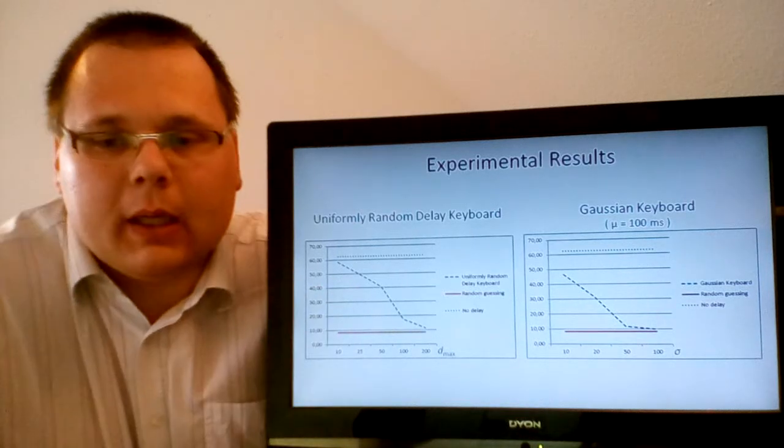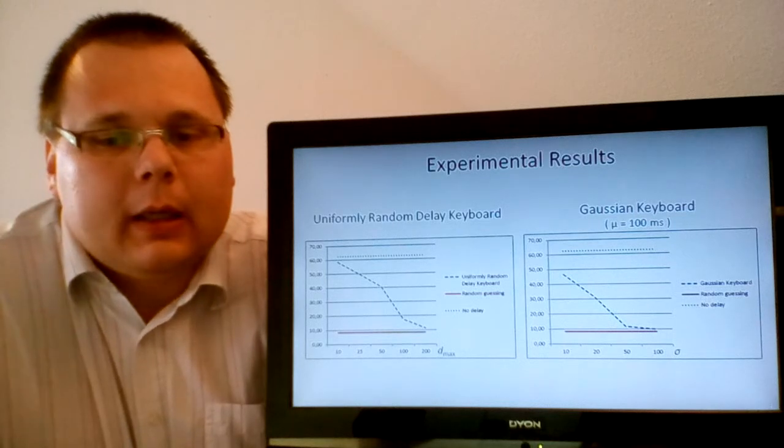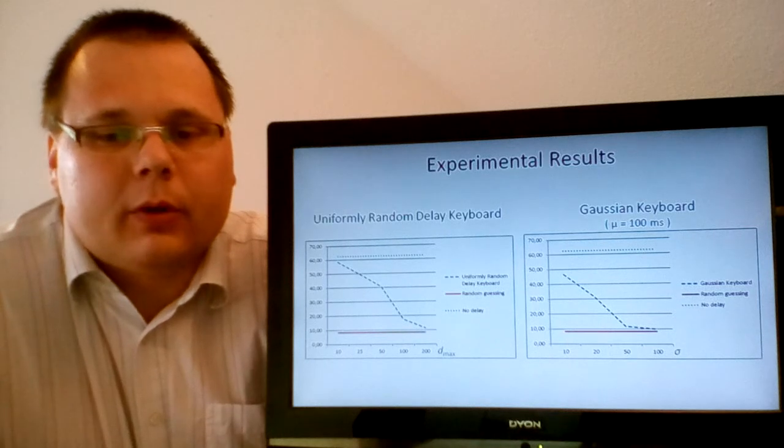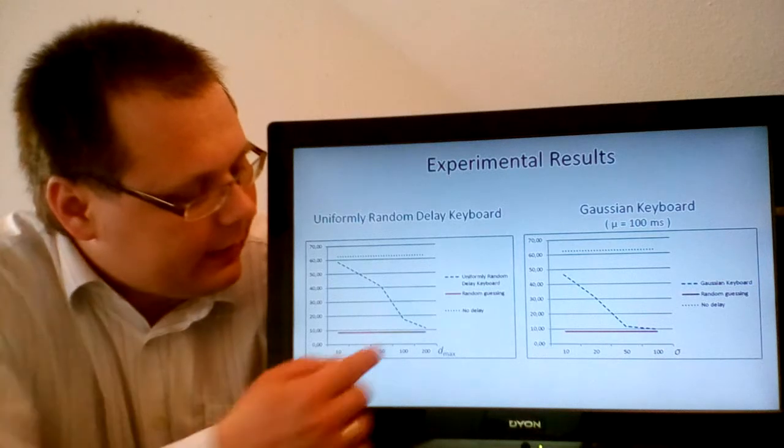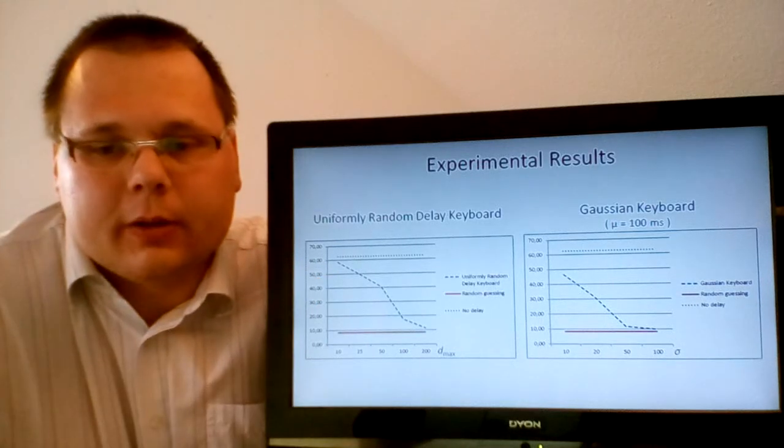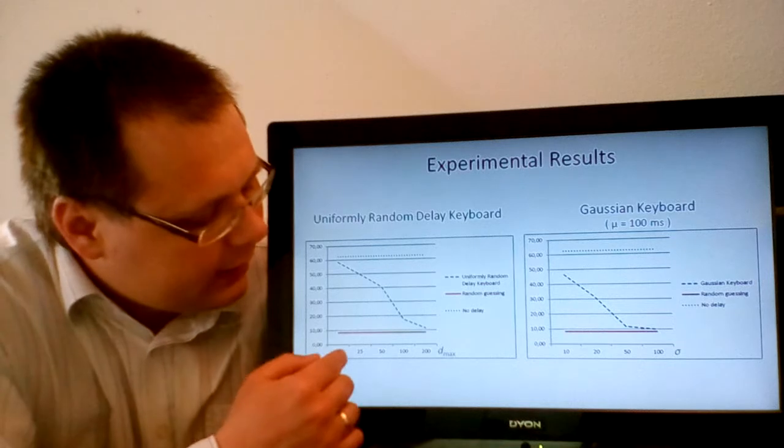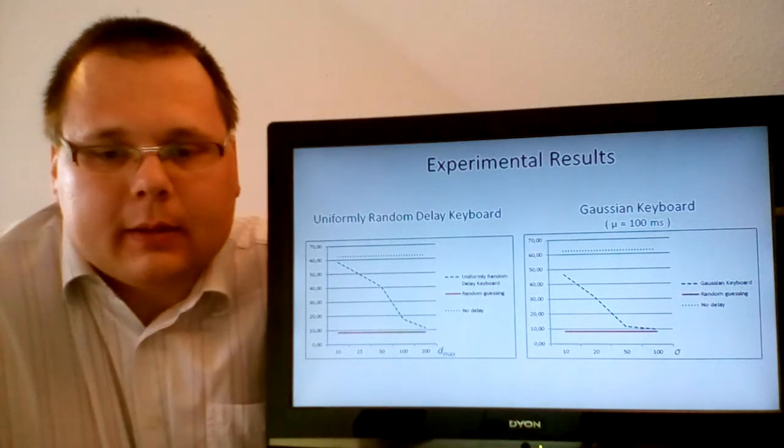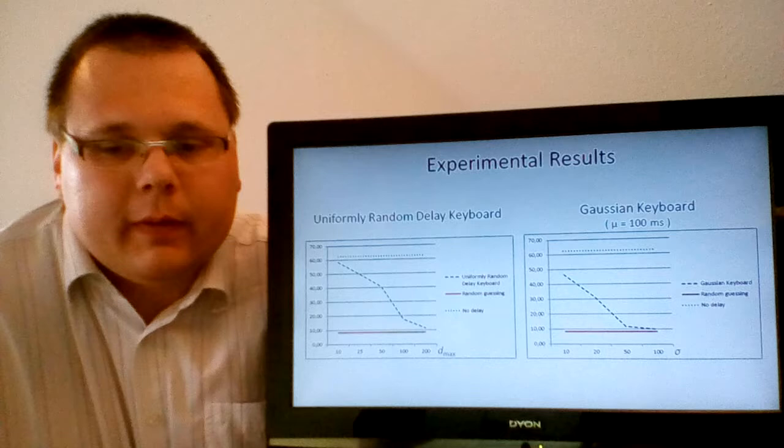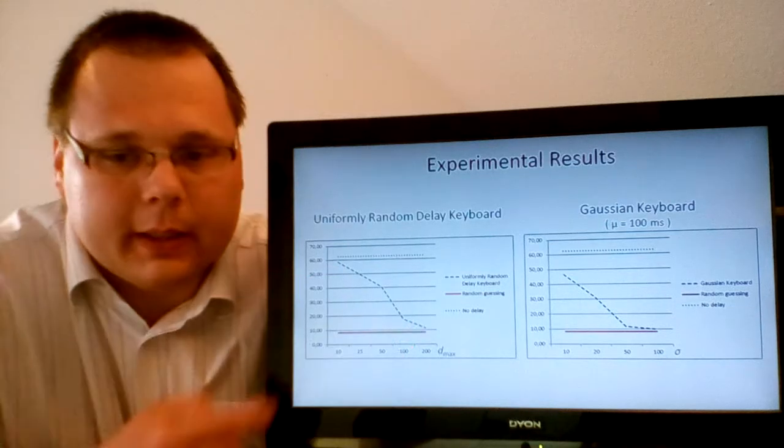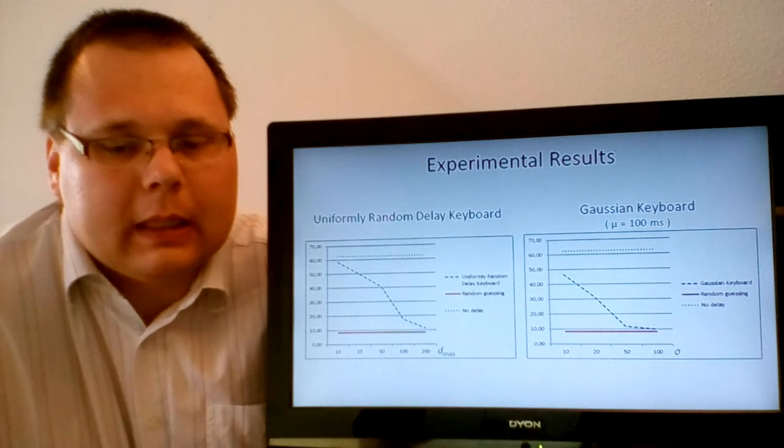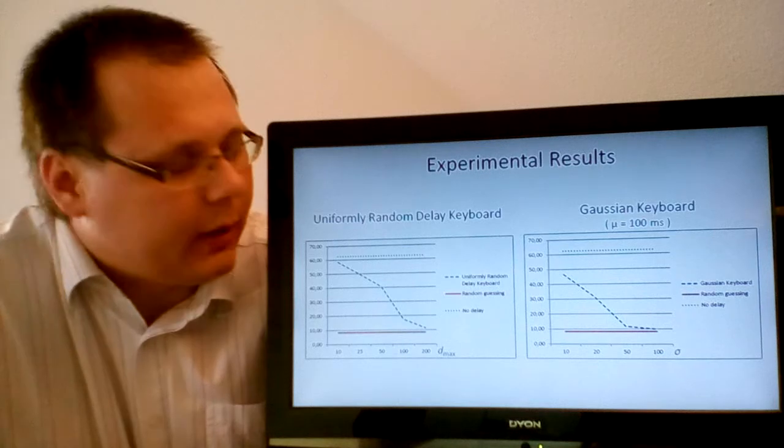We performed experiments with various parameters with both privacy-aware keyboard models that were proposed in this talk. In the left, the results for the uniformly random delay keyboard are shown. And in case of this privacy-aware keyboard model, the random delay is generated from a uniform distribution in the interval between 0 and Dmax. And here the classification accuracy is shown by the blue curve as a function of Dmax, that is, the horizontal axis shows Dmax and the vertical axis shows classification accuracy. As one can see, with increasing Dmax, the classification accuracy decreases, and this shows that privacy-aware keyboard indeed does the right job in this case.